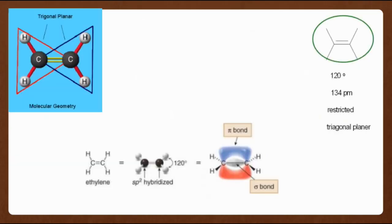Double bonded carbons are sp² hybridized and have trigonal planar shapes with the bonded atoms at angles of 120 degrees to each other. Free rotation is not possible around the carbon-carbon double bond in alkenes, making the carbon chains less flexible than those of alkanes with the same number of carbons. This lack of free rotation also gives rise to geometric isomerism in alkenes. Alkenes are non-polar since they contain nothing but carbon-carbon and carbon-hydrogen bonds and they are not soluble in water. They are also generally less dense than water.